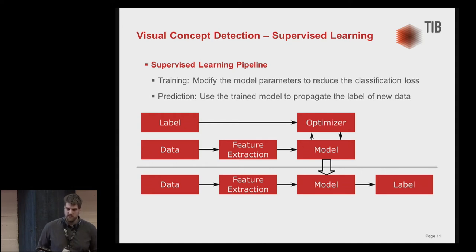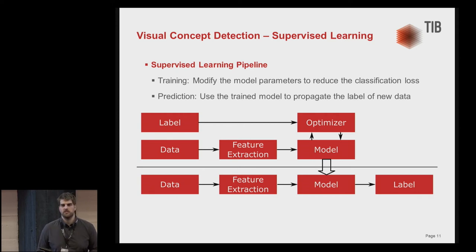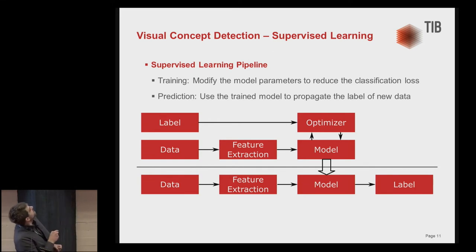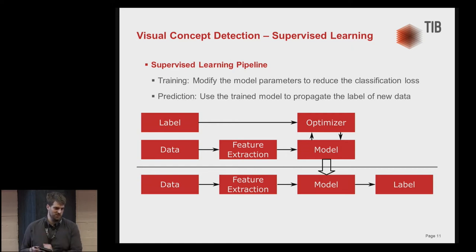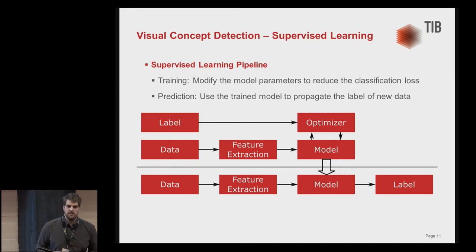The learning process is split into two parts: training and prediction. In the training process, we feed input data through our pipeline and generate labels from the model. We also need ground truth labels for the input data — for example, confirming that an image truly contains a stone — and then we optimize the model parameters so the model more likely predicts correctly. We repeat this step several times, and when training is done, we use the trained model in the prediction module with new, unlabeled data.